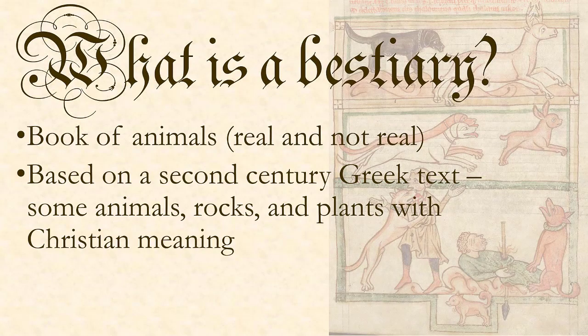Bestiaries in medieval Europe were based on a second-century Greek text called the Physiologus, which had a small collection of animals, rocks, and plants — much like later bestiaries. They imbued these animals, rocks, and plants with Christian meaning, with Christian allegory, to fit these different parts of creation into God's wider plan and as representations of that plan.